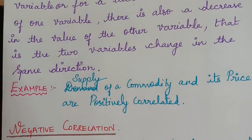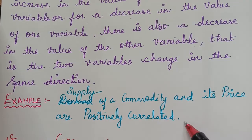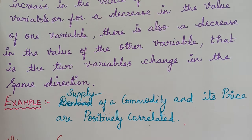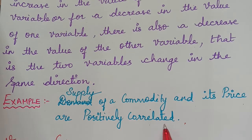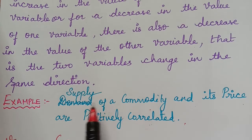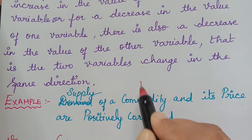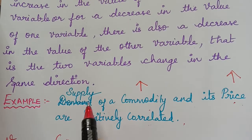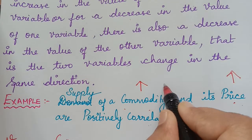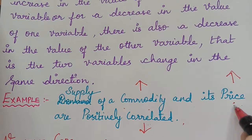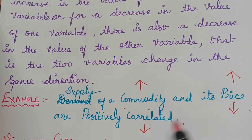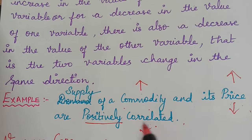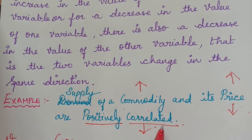An example of positive correlation is the quantity supplied of a commodity and its price. These two are positively correlated because when the quantity of the commodity supplied increases, the price also increases, and if the quantity supplied decreases, the price also decreases. When both change in the same direction, they are positively correlated.